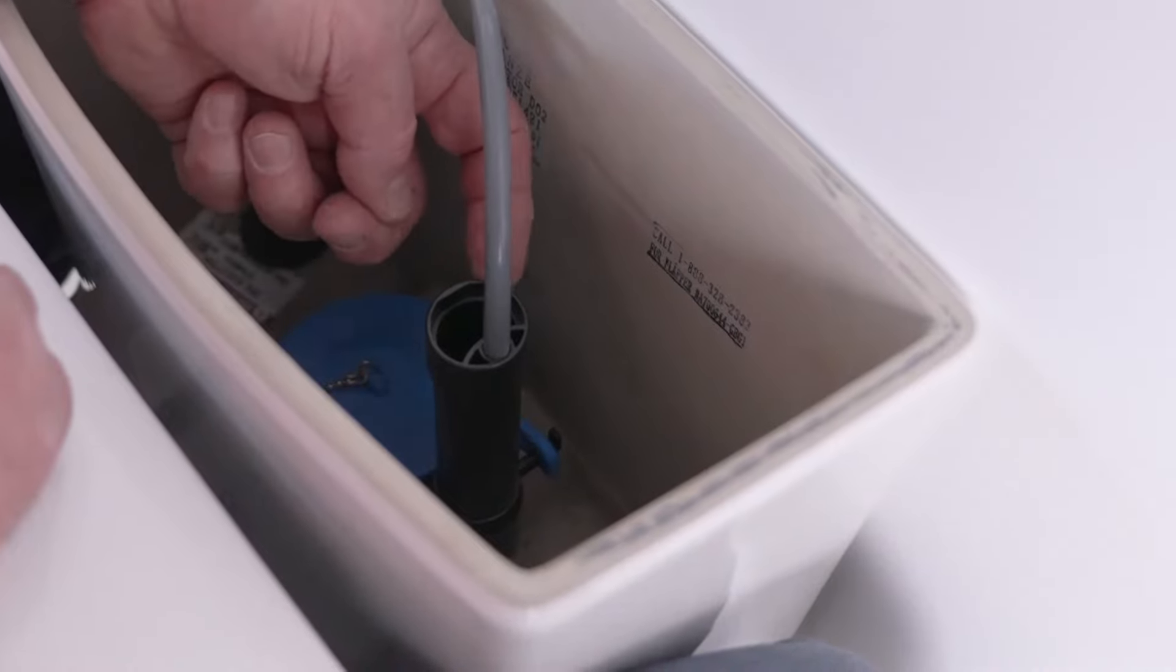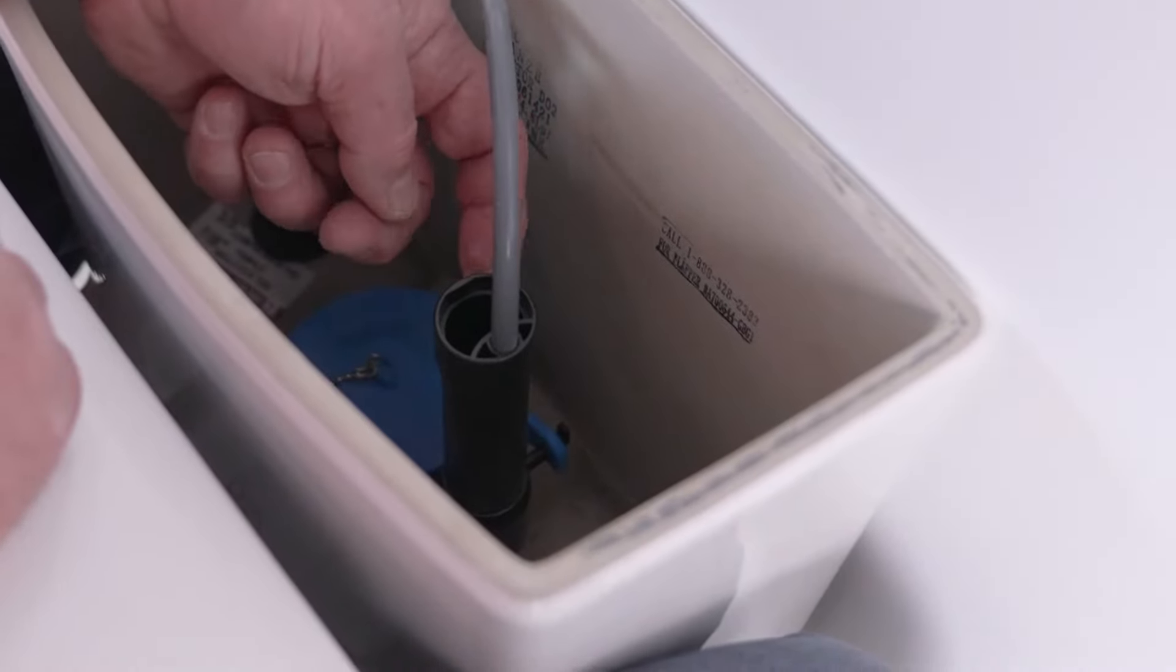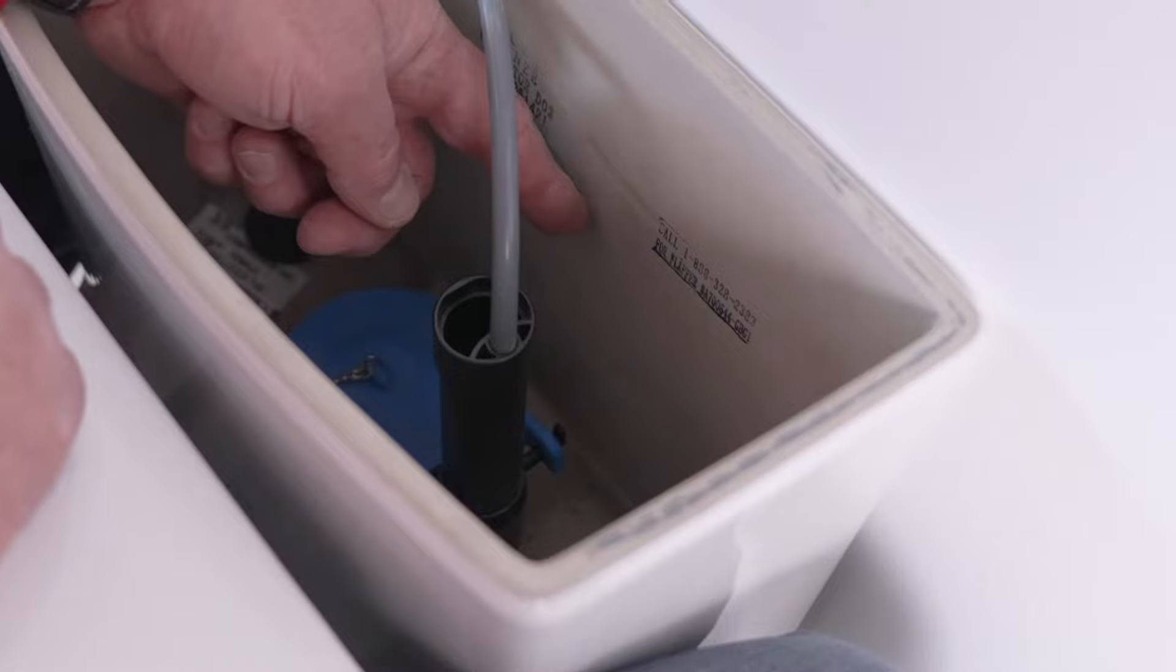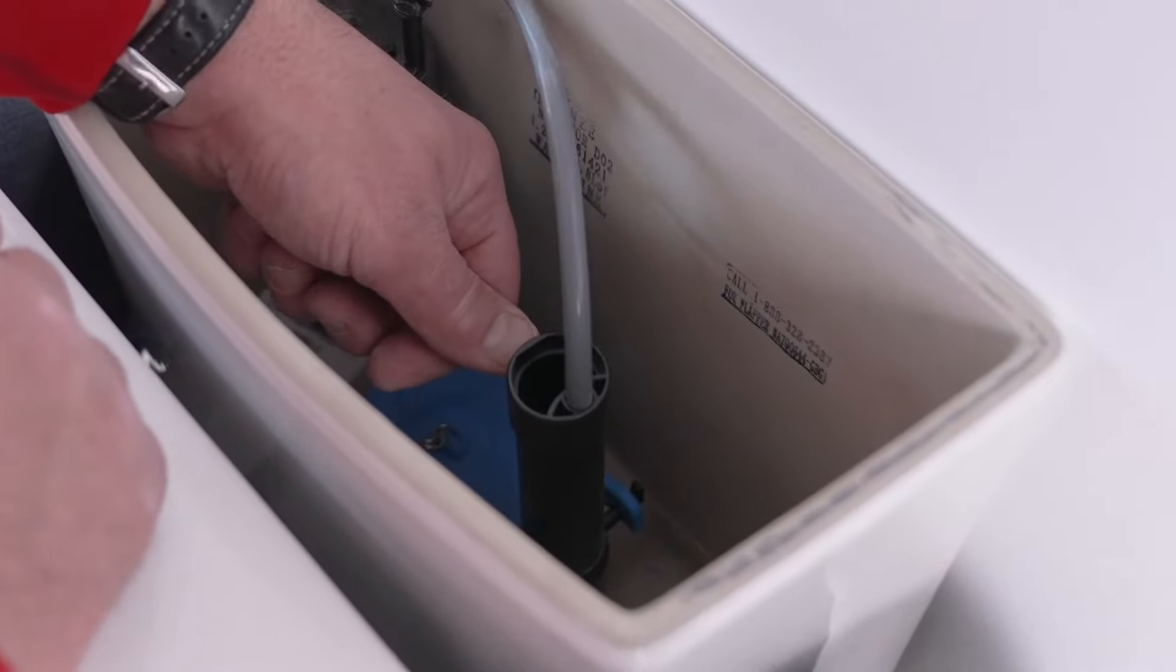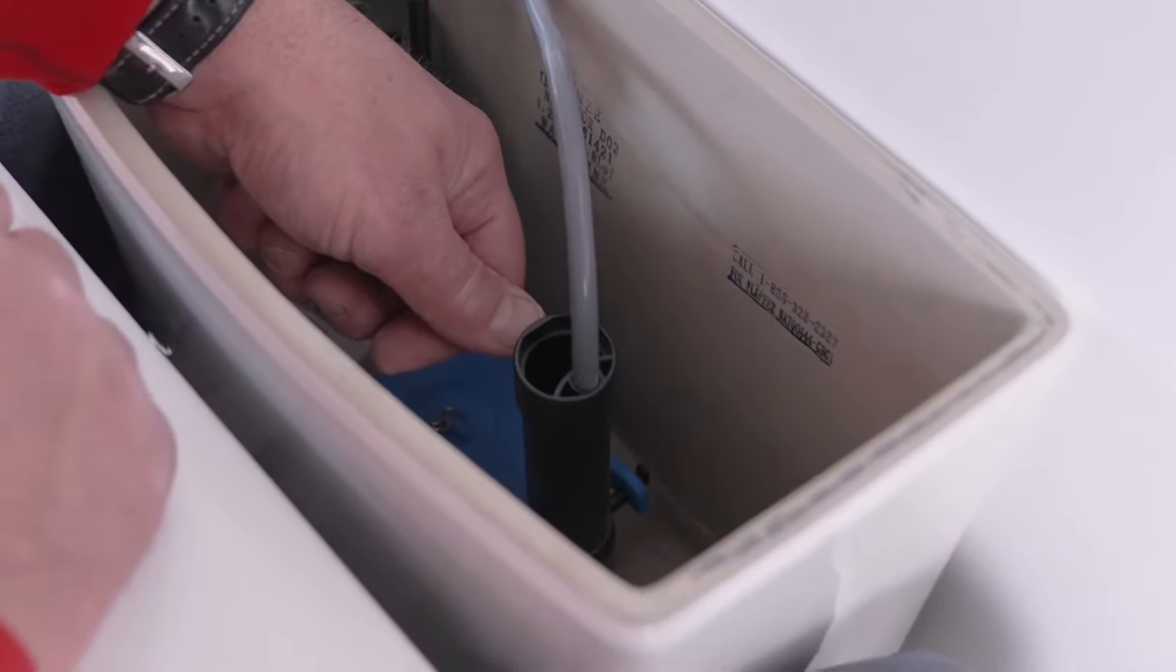And then this pipe right here is what's called the overflow tube. You want to make sure that the water level in your toilet is about half of an inch or so below this tube.